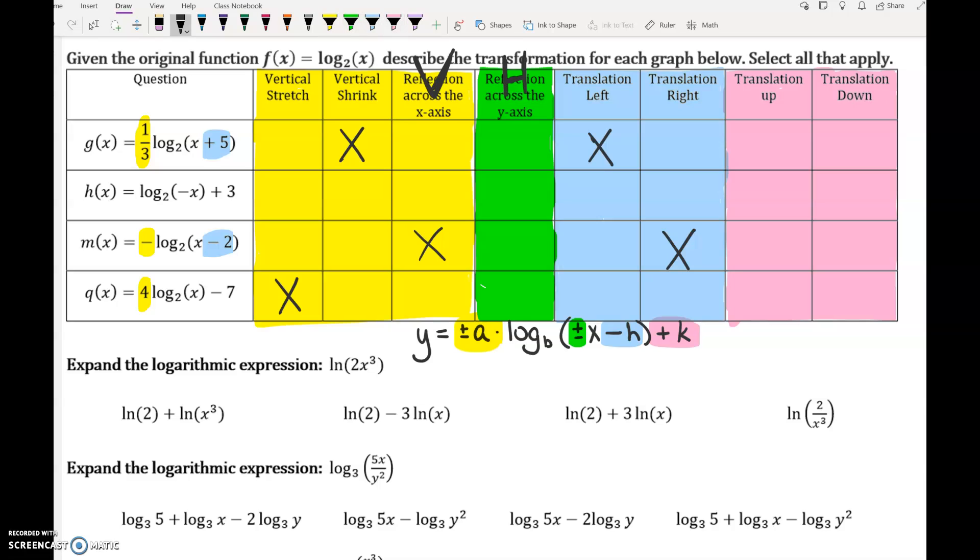Second equation. First thing I see is there's a negative in front of the x. That negative in front of the x is a horizontal reflection across the y-axis. The plus three is a vertical movement, so up or down, and that one's normal, so that one is up. That equation is now done.